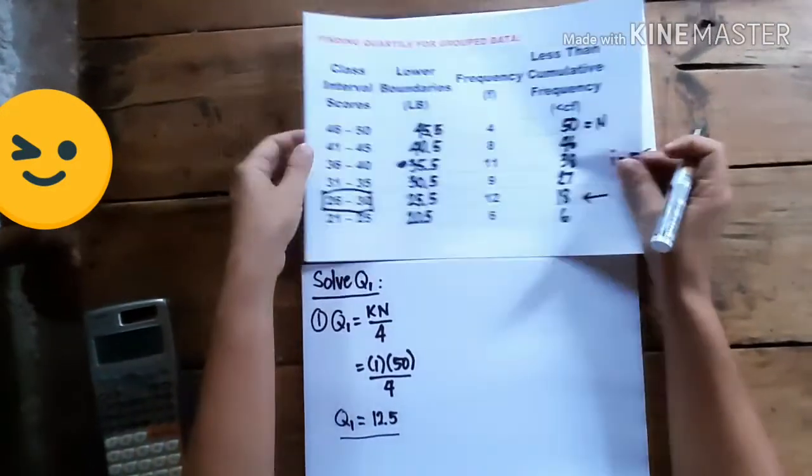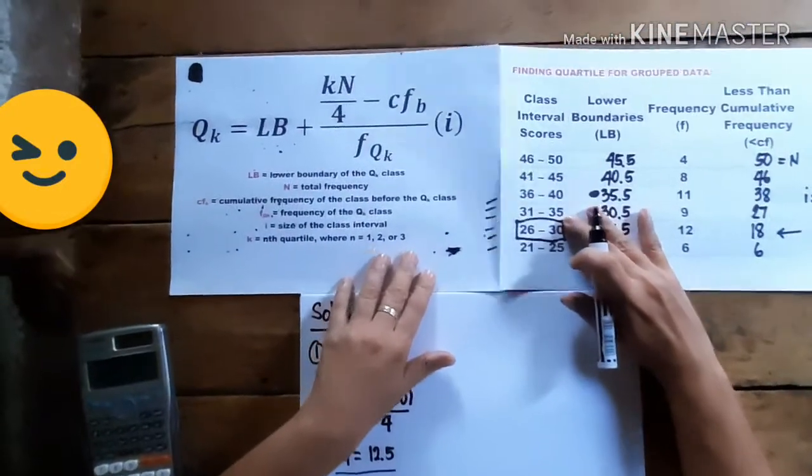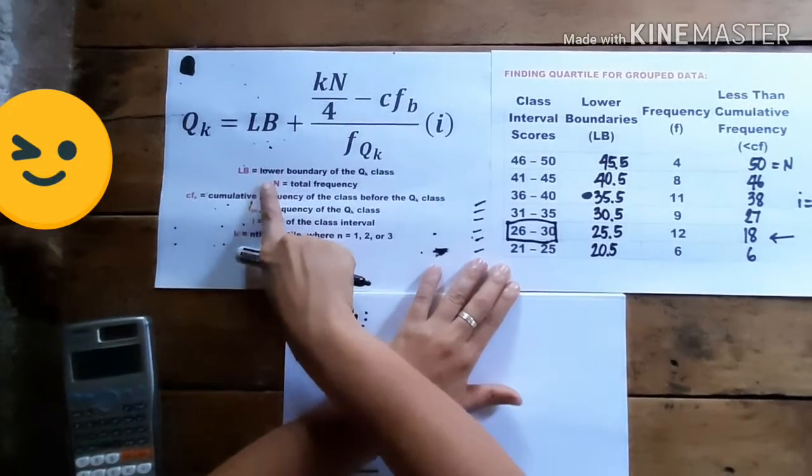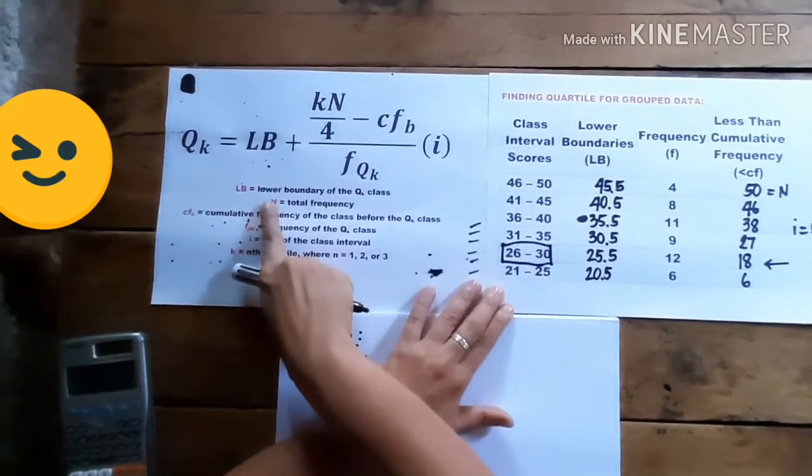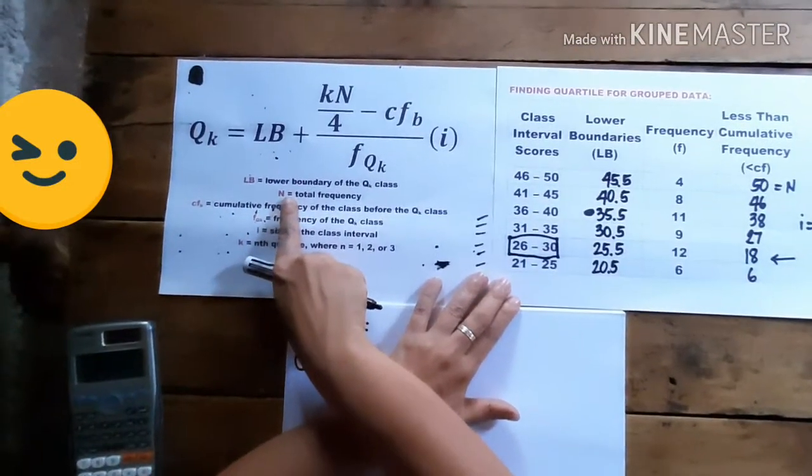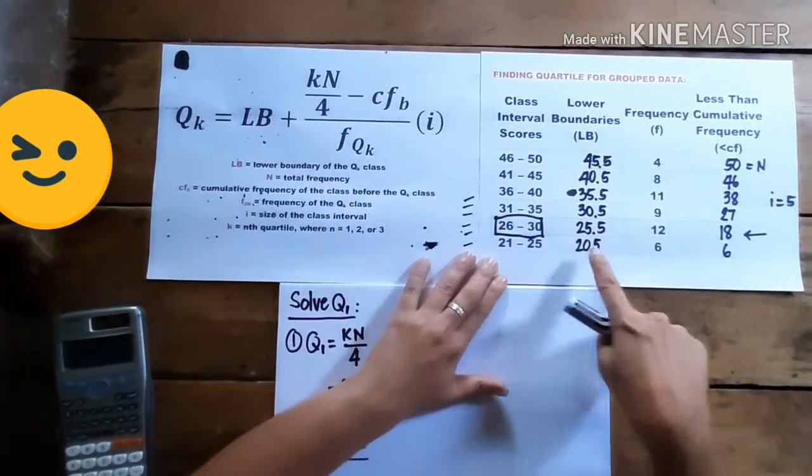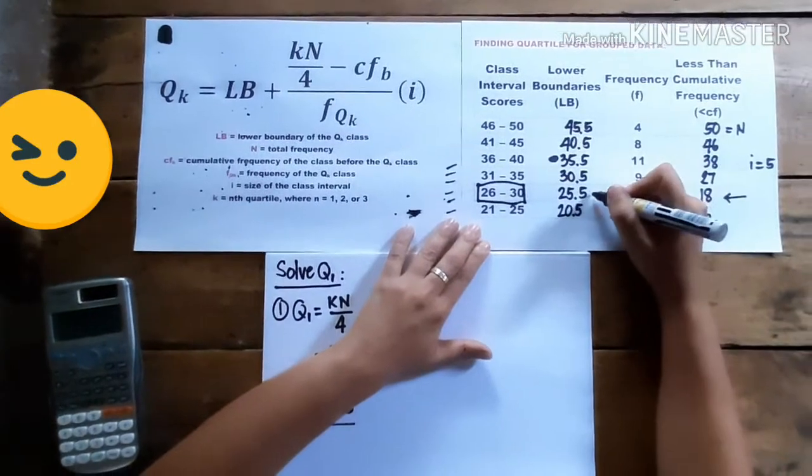Okay, now, if we look at the formula, we need to get the lower boundary of our first quartile class interval. So that means the lower boundary we need to solve is this one.